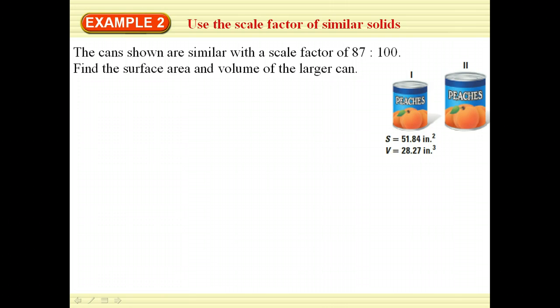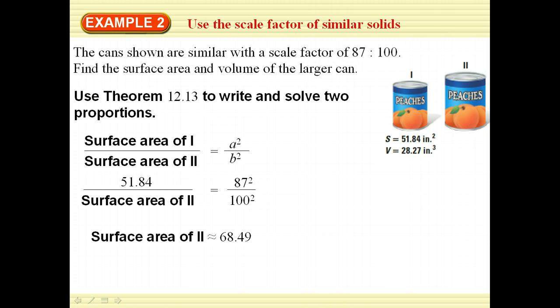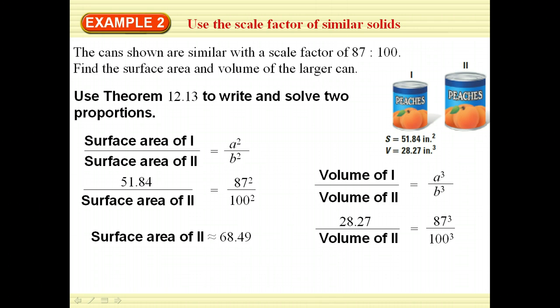The cans shown are similar with a scale factor of 87 to 100. Find the surface area and the volume of the larger can. So for my theorem, I can write and solve two proportions. For my surface area, the surface area of one over two would be a squared over b squared. So 51.84 is to the surface area of the second one as 87 squared is to 100 squared. So that's just solving a proportion. It comes out to be about 68.49. For my volume, the volume of one has to be a cubed to b cubed. So 28.27 to the volume of the second one is equal to 87 cubed over 100 cubed. And once again, cross multiplying and dividing will give us our volume of our second can.